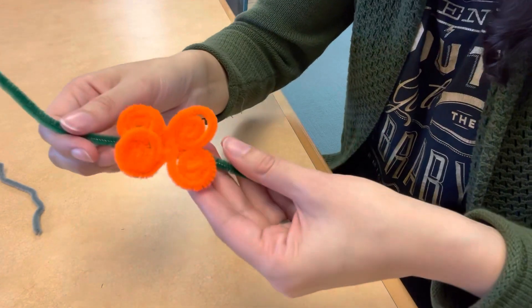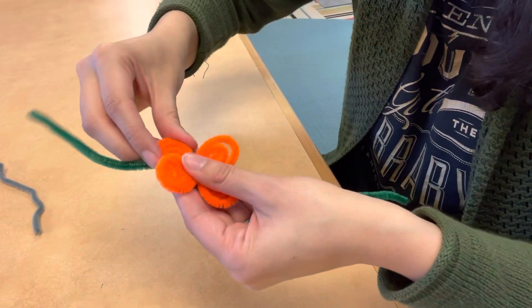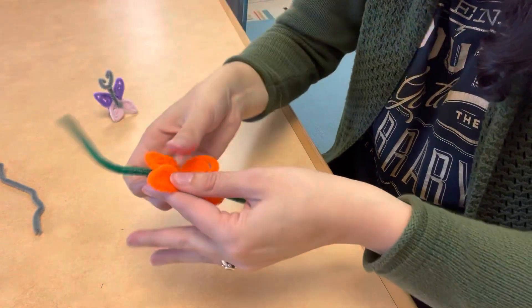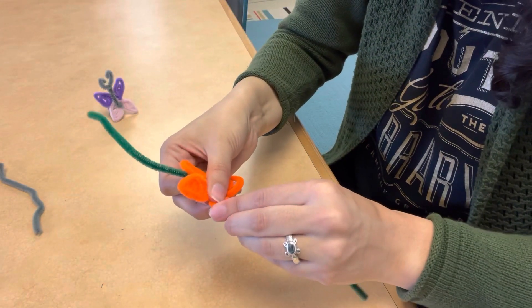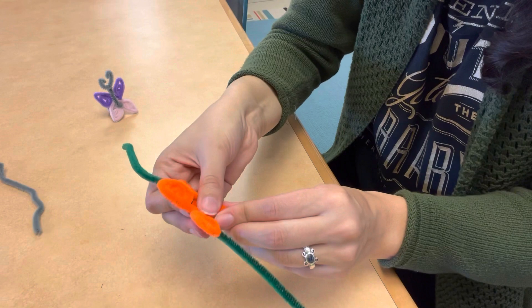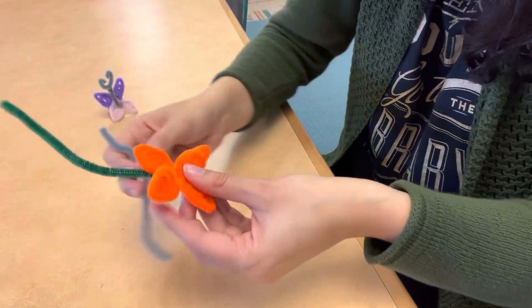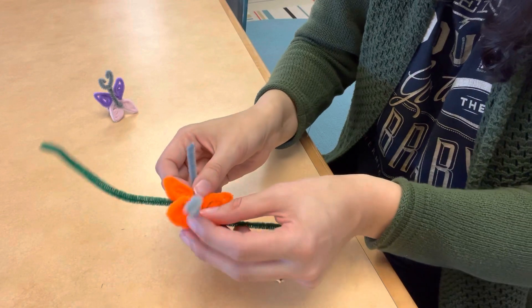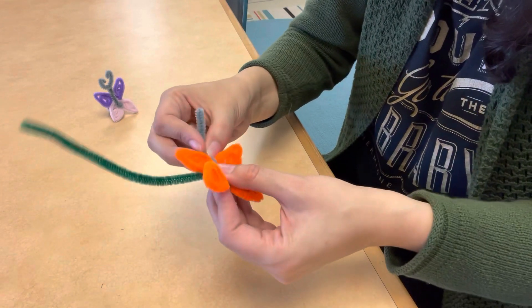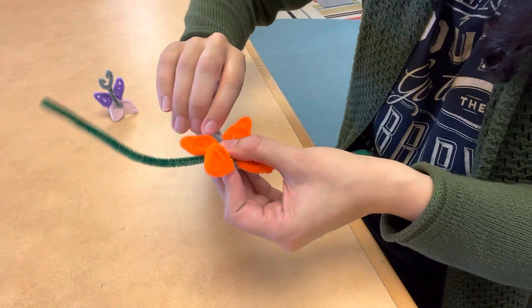And when you're done, you're going to pinch the sides just to help form the wings. Just like that, and then you're going to add the middle part, the small pipe cleaner. You're gonna twist at the top and form the antennas again with just a little curl.